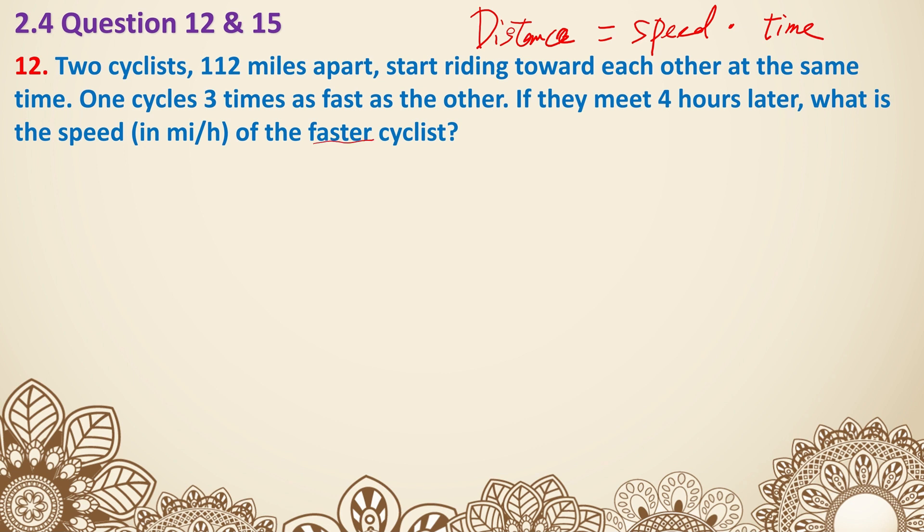Even though it says faster cyclist doesn't mean you have to set that as your x. Because the faster one, if you set it as x, the other one would be the slower one, so you'd have a fraction. So instead, we can say the slower cyclist has a speed of s. That would mean the faster one has a speed of 3s, because it's three times as fast.